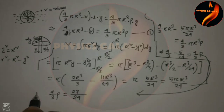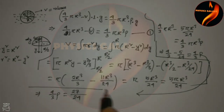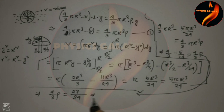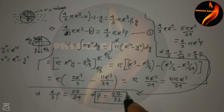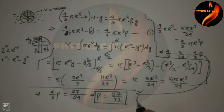Solving for ρ: (4/3)ρ = 27/24, so ρ = (27/24) × (3/4) = 27/32. The density of the material is 27/32. The correct option for this problem is option B.